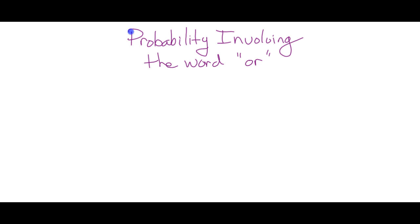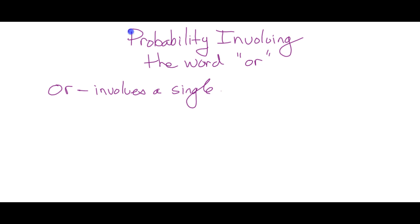So that's the first big thing — OR involves a single event. If I draw a card from a deck and it is a heart OR a ten, you've only done a single event. I roll a pair of dice and the sum is even OR greater than nine — a single event. I've done one thing. Because the word AND involves multiple events, you're doing more than one thing.